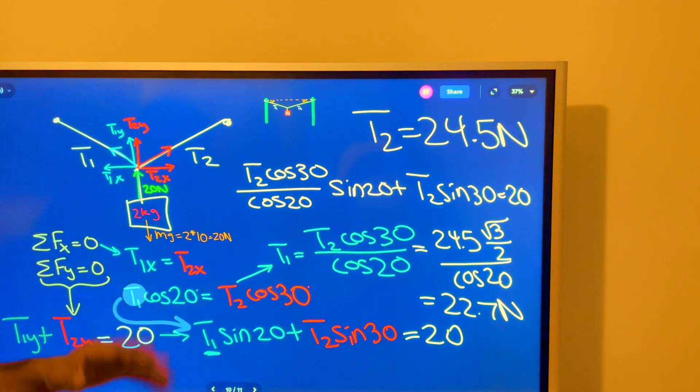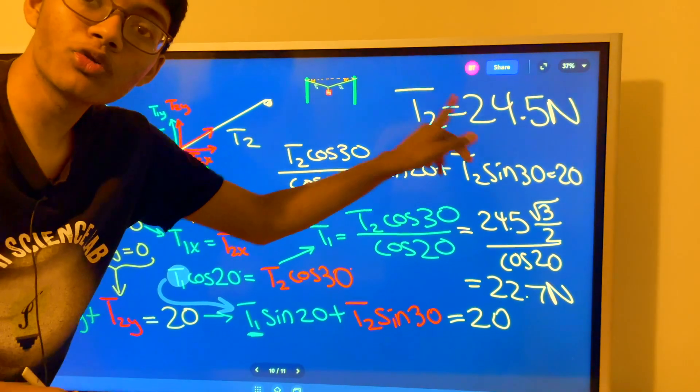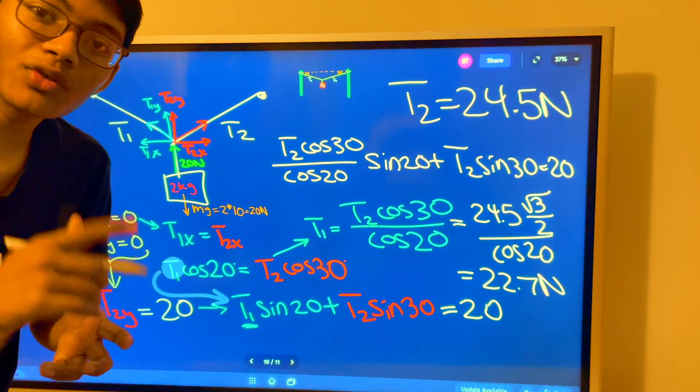And that, ladies and gentlemen, is the tension on rope 1. Here's the tension on rope 2, 24.5. Thanks for watching this episode. We'll check you out next time.